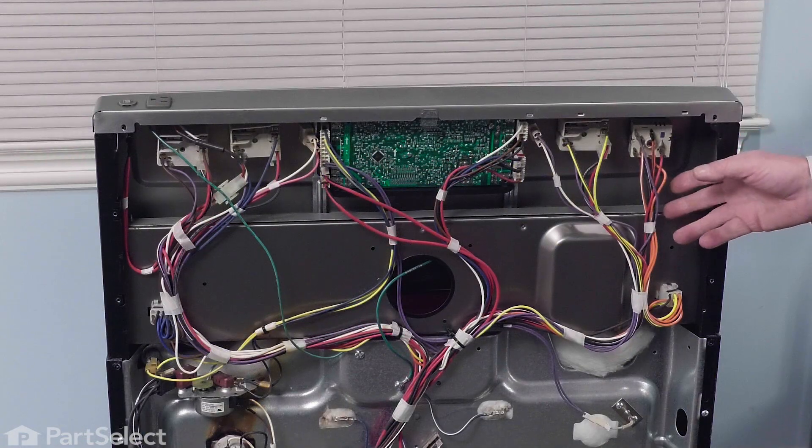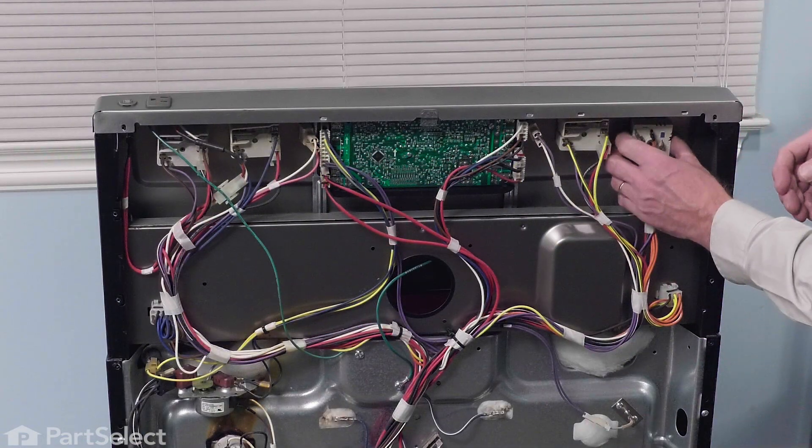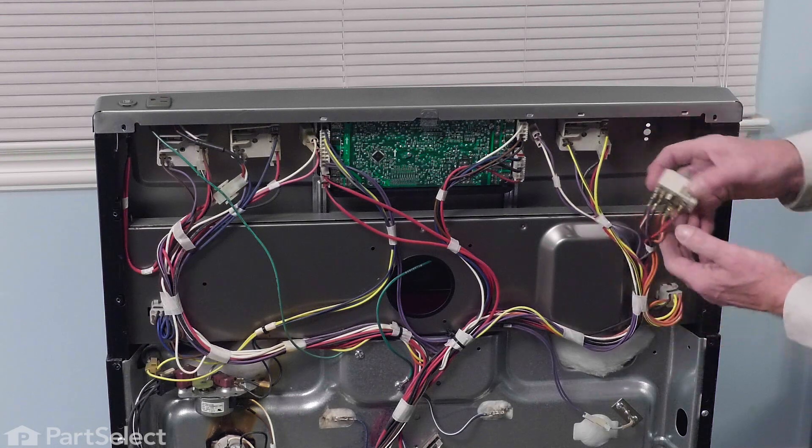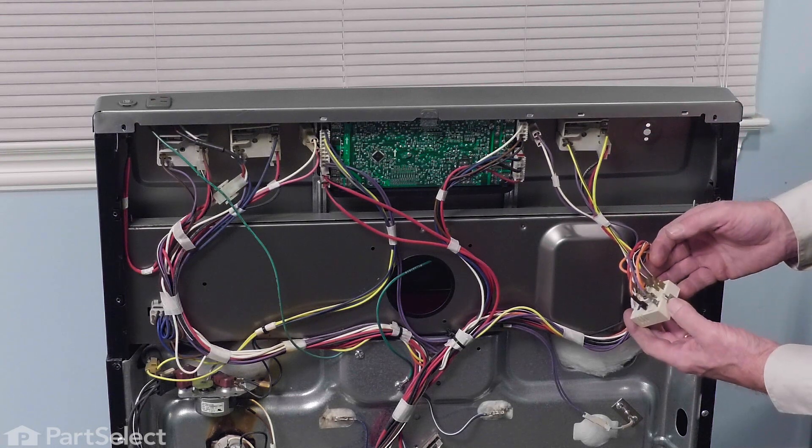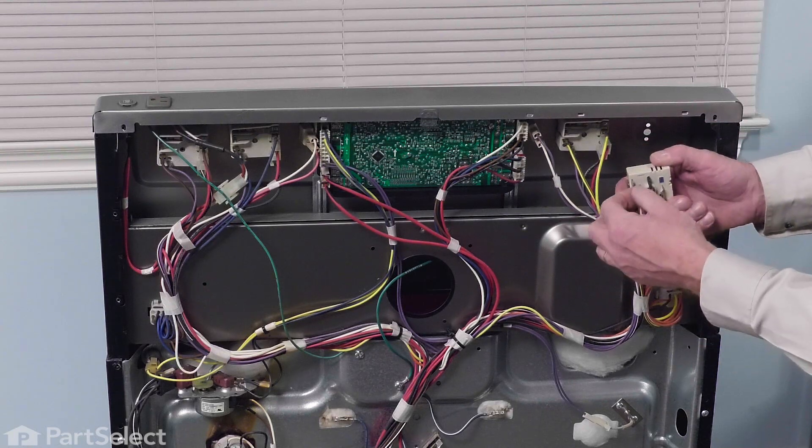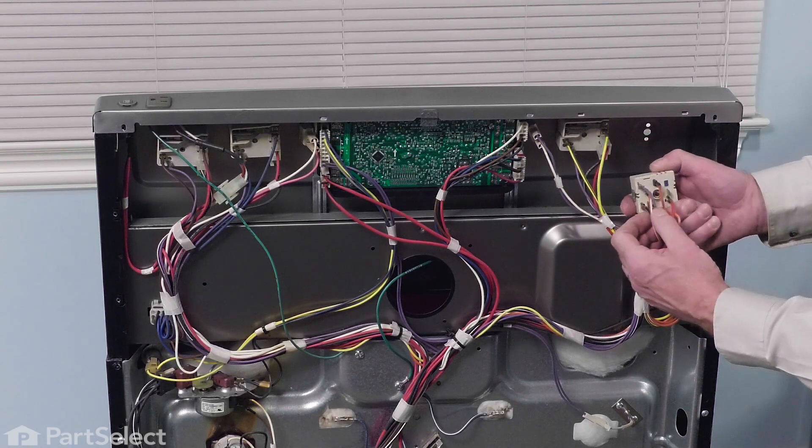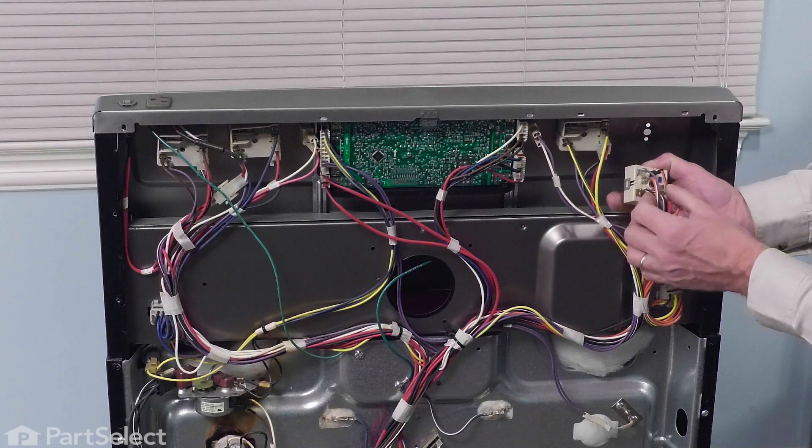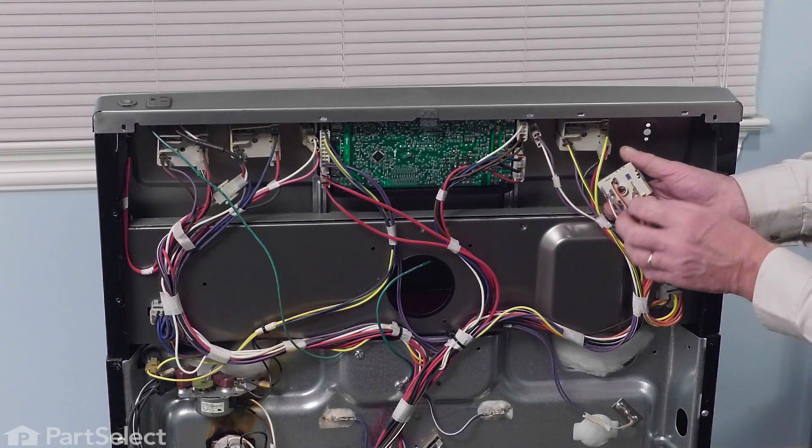Now we have the panel removed and locate the infinite heat switch. The easiest way to replace that is to simply remove one wire and put it onto the new control, or if you want to, you can record all of the individual locations.